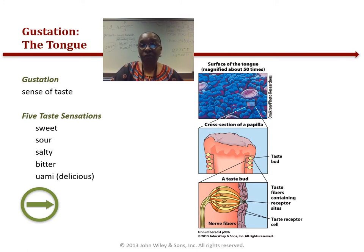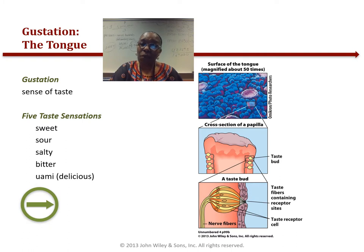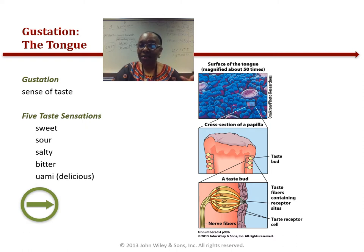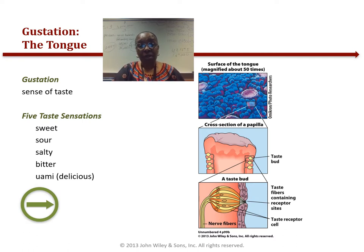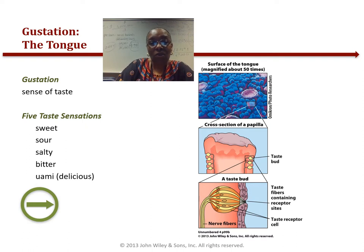Humans and other animals have a preference for sweet foods, which are generally non-poisonous and good sources of energy. Setting aside smell, there are five distinct tastes: sweet, sour, salty, bitter, and umami. Umami means delicious or savory, and refers to sensitivity to the amino acid glutamate. Glutamate is found in meats, meat broths, and monosodium glutamate — also known as MSG — which you'd find in Chinese restaurants.